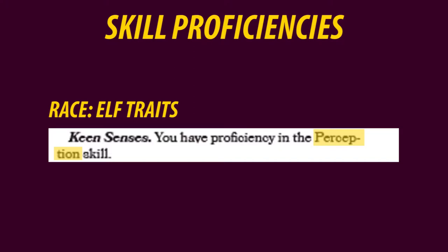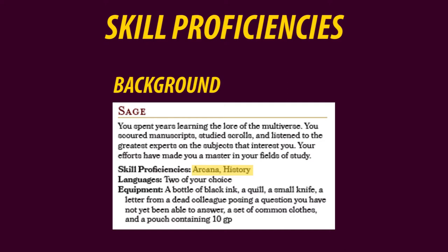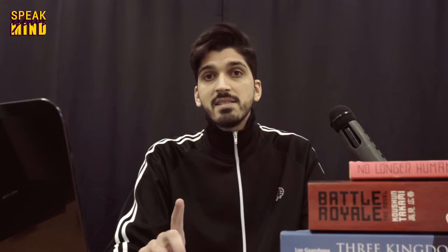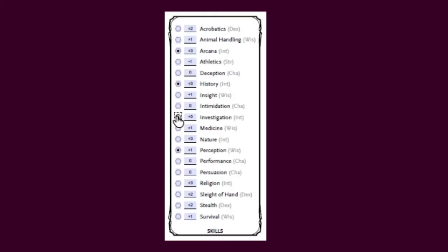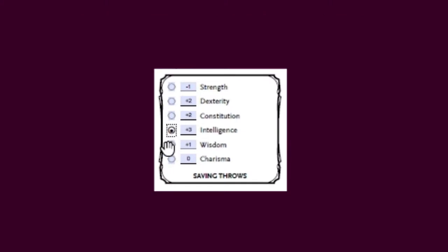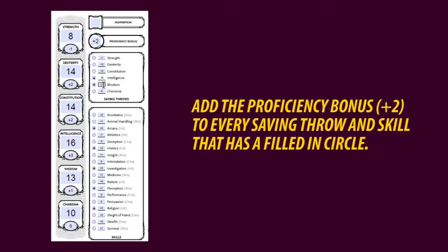Your class gives you options for which skill you can choose to add your proficiency bonus to, but background and race do not. It's better to start with race and background, then choose from the options that are left. My high elf gets skill proficiency in perception from his race, and as a sage, he gets skill proficiency in arcana and history. Now we're ready to check what proficiencies he can choose from his class — he can choose two from: arcana, history, insight, investigation, medicine, and religion. Since arcana and history are already covered, I'll choose investigation and religion.